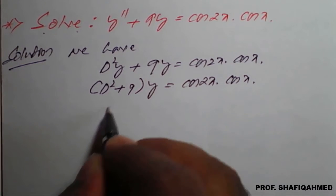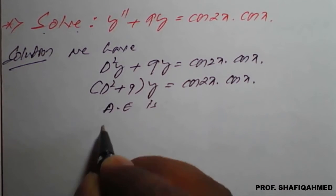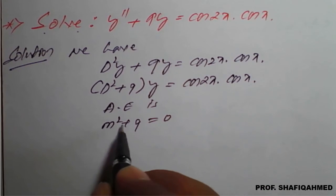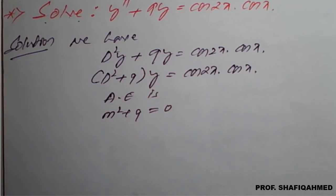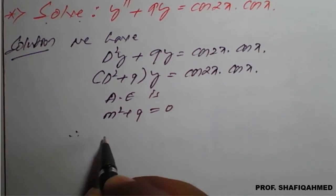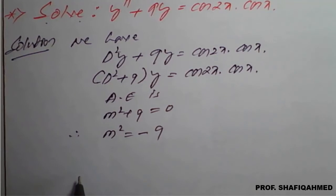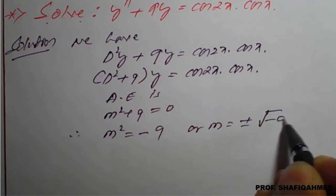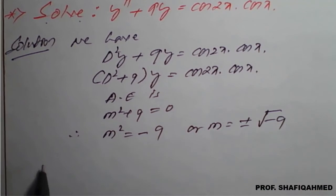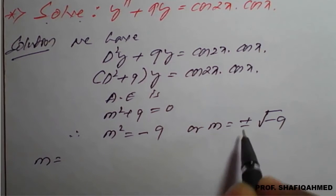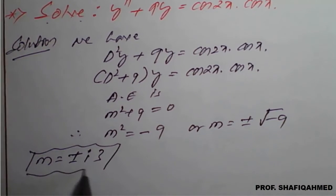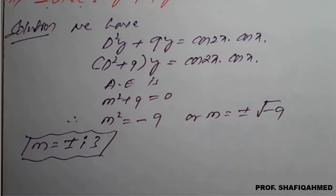Writing the auxiliary equation: m² + 9 = 0. So m² = −9, giving m = ±√(−9) = ±3i. We get two complex roots with no real part — the real part is missing here.